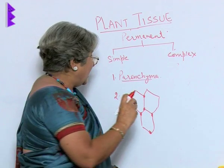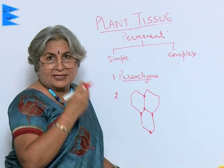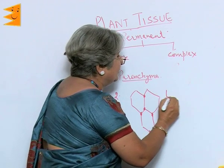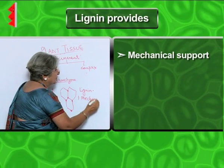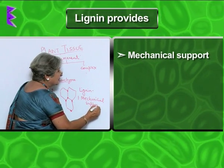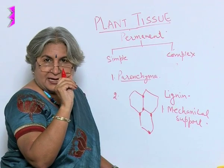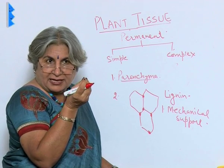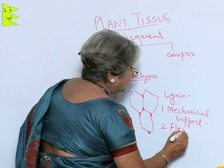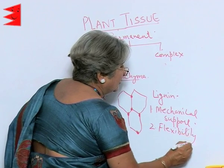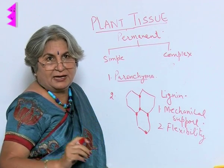Another difference from parenchyma is that these cells are closely arranged with no intercellular spaces. This thickening provides mechanical support and also provides flexibility because the walls are not thick all along. If you see a tender stem you will not be able to easily break it, and that is required — otherwise the plant would keep breaking. This tissue is present just below the epidermis and sometimes around the vascular bundles. This tissue is called colenchyma.